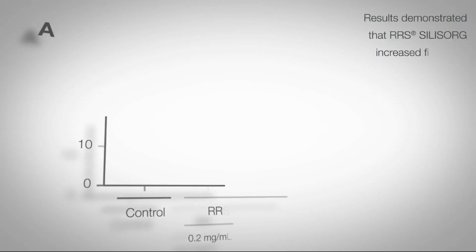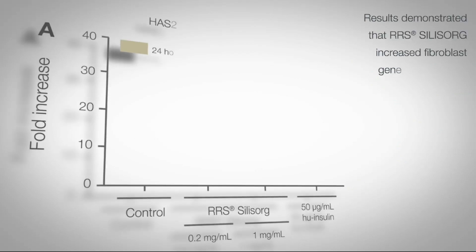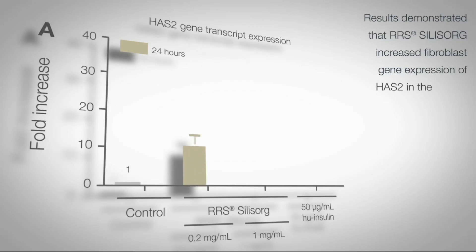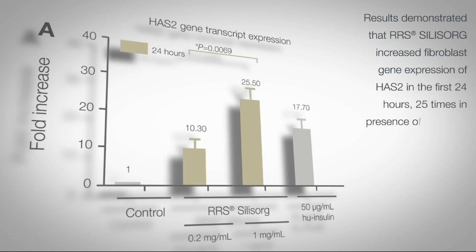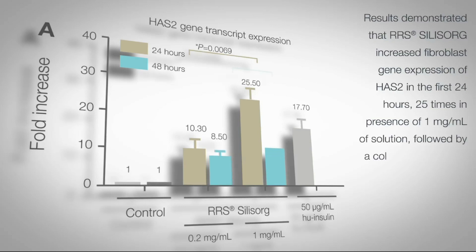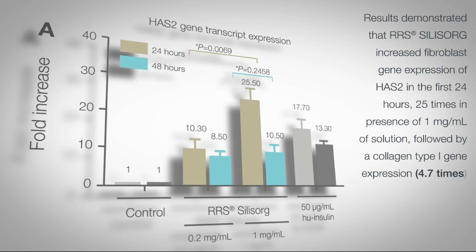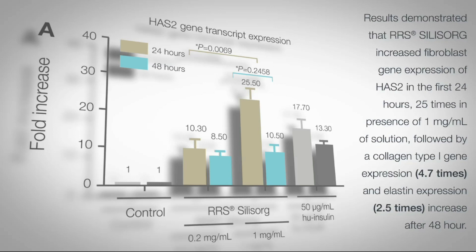Results demonstrated that Aresilisrox increased fibroblast gene expression of HAS2 in the first 24 hours 25 times in the presence of 1 mg per ml of solution, followed by collagen type 1 gene expression 4.7 times and elastin expression 2.5 times increase after 48 hours.